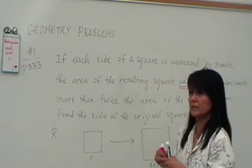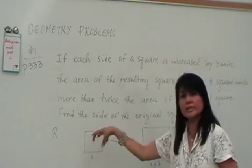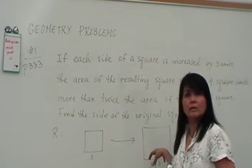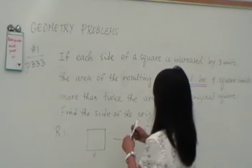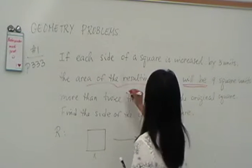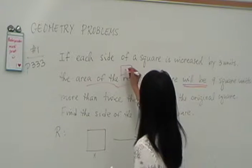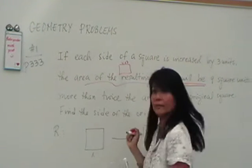The area of the resulting, that really has something to do, is it the original or the new square? The new square. So this is the area of the new square. This is the area of the one with x plus 3 for the side.